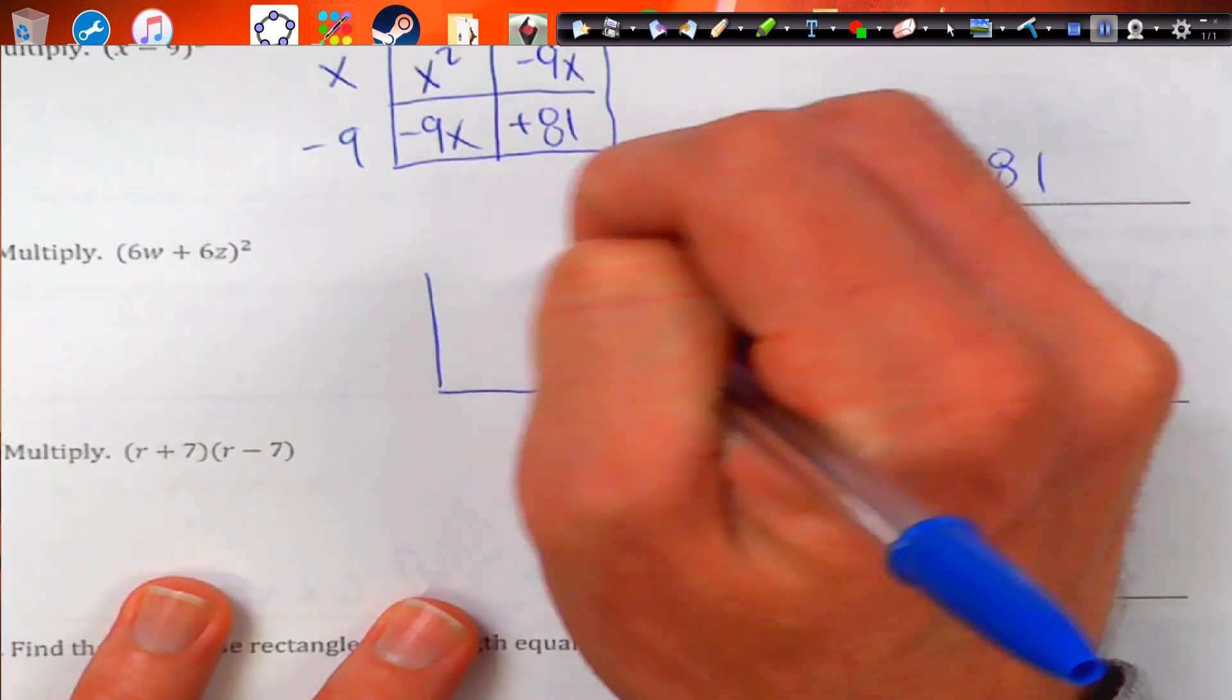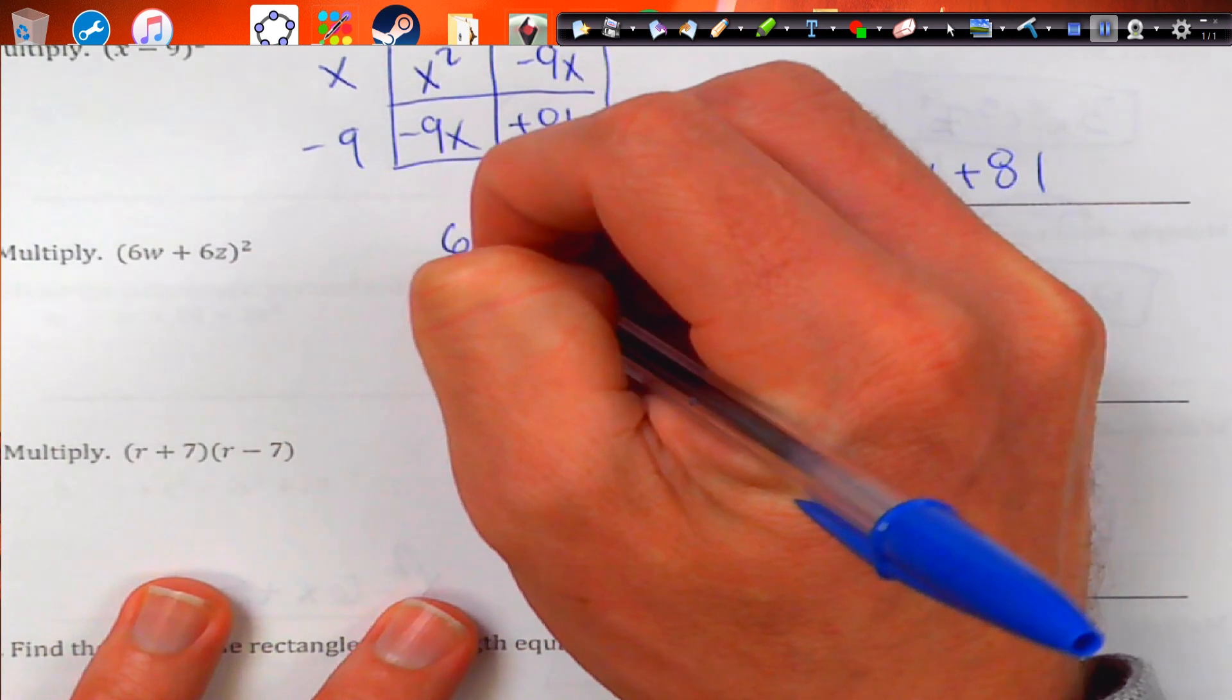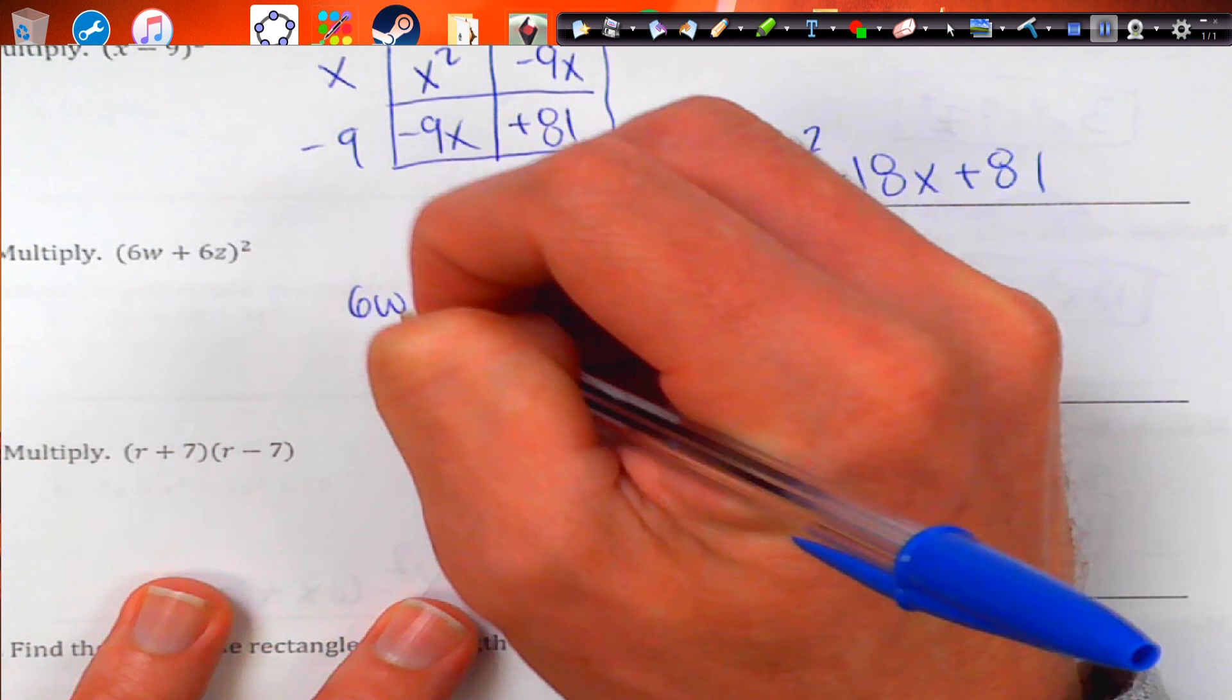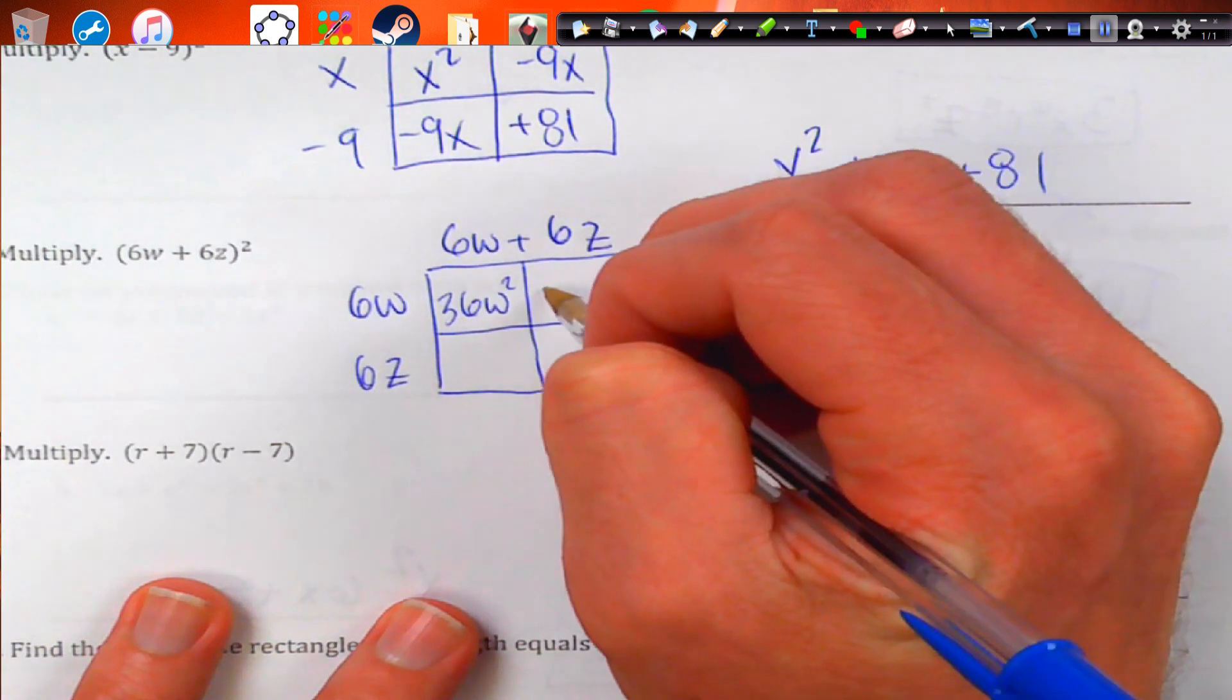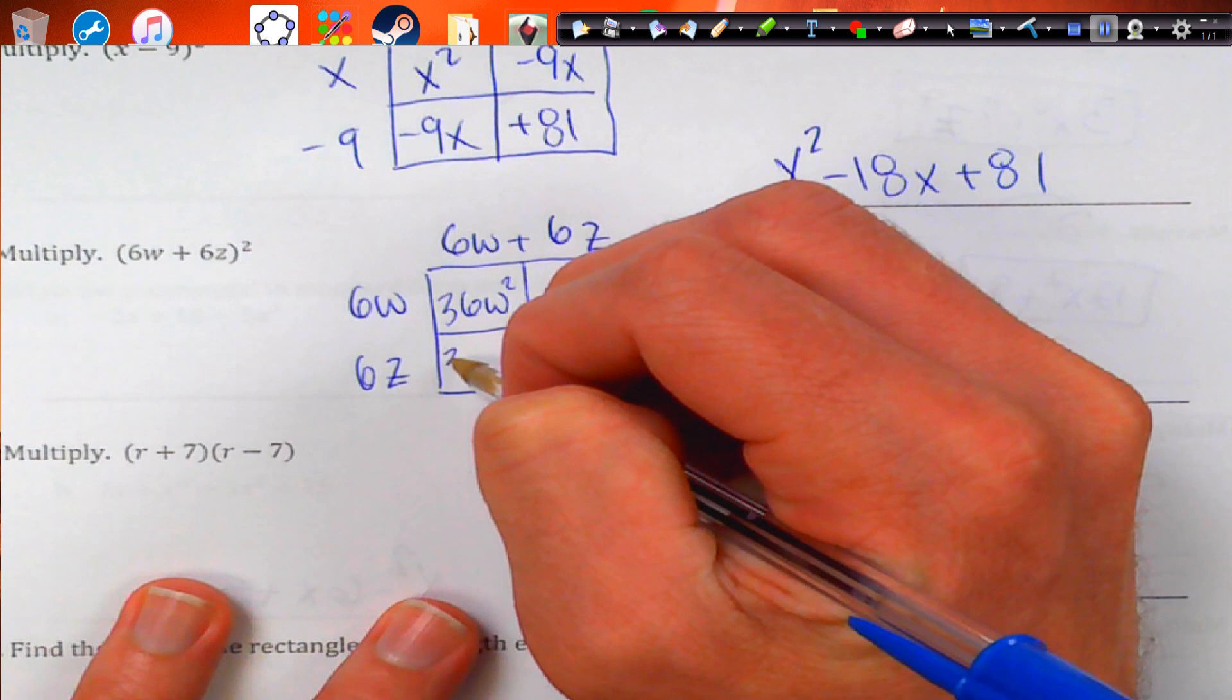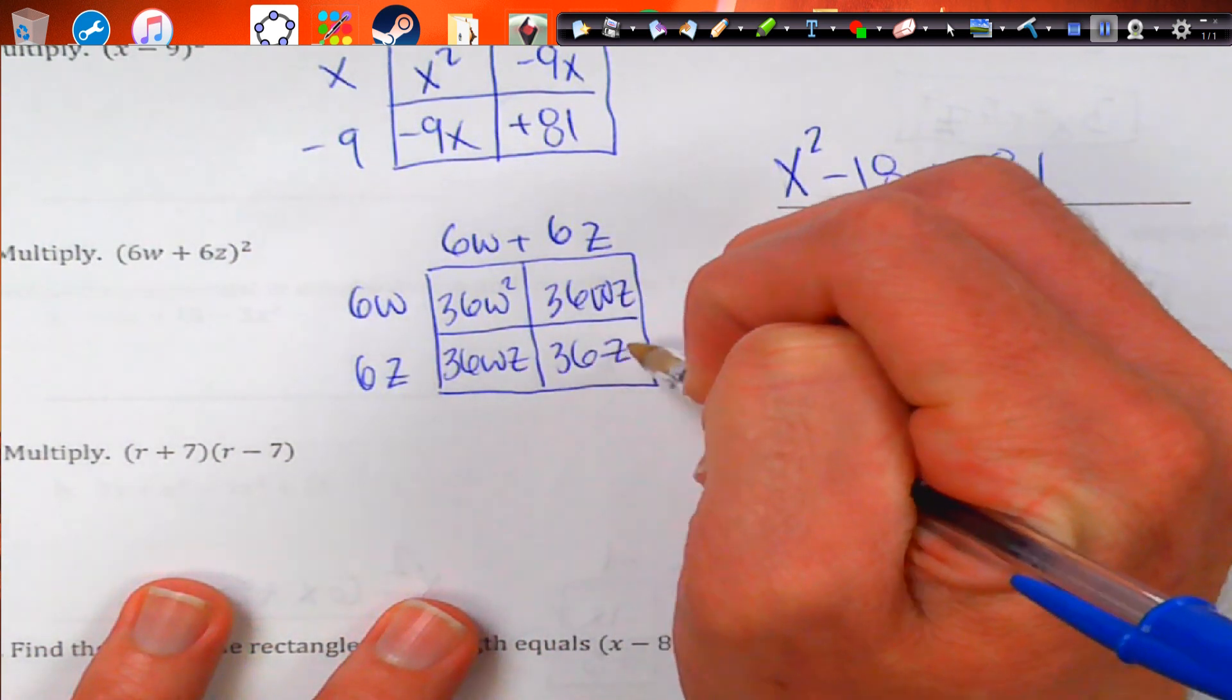Believe it or not, we are doing a box method. You sound like a broken record, Mr. Smith. That's because you are. So, 6 times 6 is 36. That's going to be 36w squared. This is going to be 36wz. This is going to be 36wz. And this is going to be 36z squared.